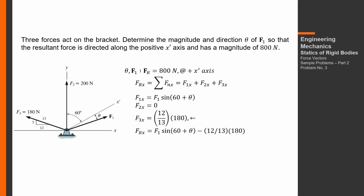Therefore, the summation of x-components: F1 sine(60 + theta) minus (12/13)(180). It's negative because that component is directed to the left.